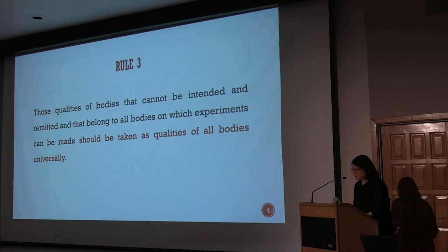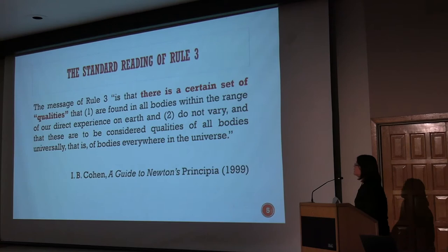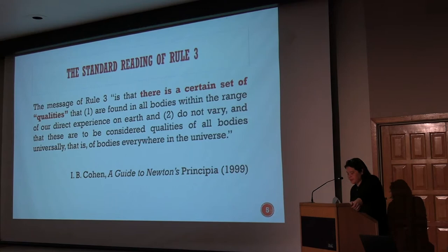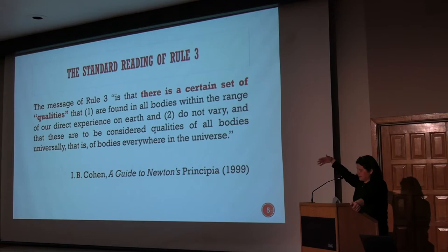What is the standard reading — and the only reading I know of other than mine? The translators of the 1999 translation of the Principia, I.B. Cohen, puts it this way: the message of Rule 3 is that there is a certain set of qualities that are found in all bodies within the range of our direct experience on earth, and do not vary, and that these are to be considered qualities of all bodies universally, that is, of bodies everywhere in the universe. What I'm calling this standard reading I call the one-set reading, because there is one set of qualities that meets two conditions.